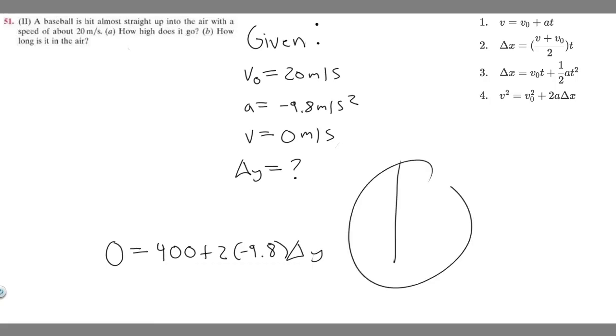So 2 times minus 9.8 is going to be minus 19.6, and then we're multiplying by Δy. In order to solve for Δy we can subtract 400 from both sides, so we get minus 400 equals minus 19.6 times Δy.